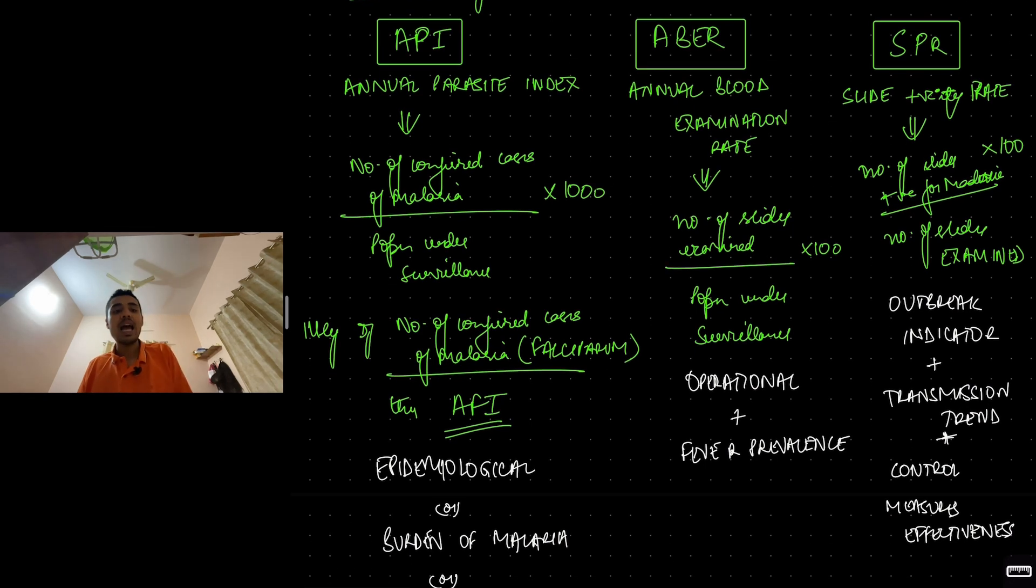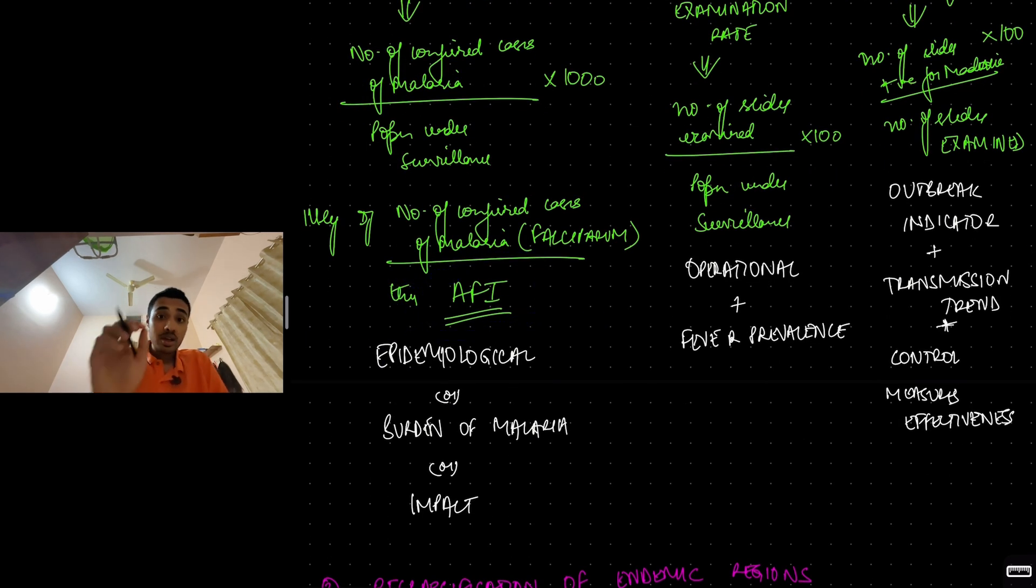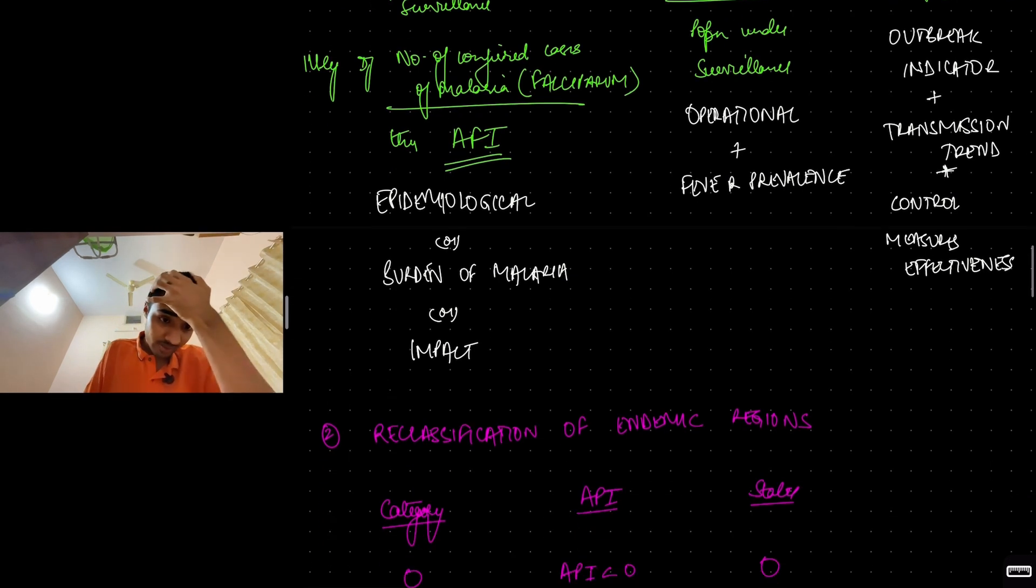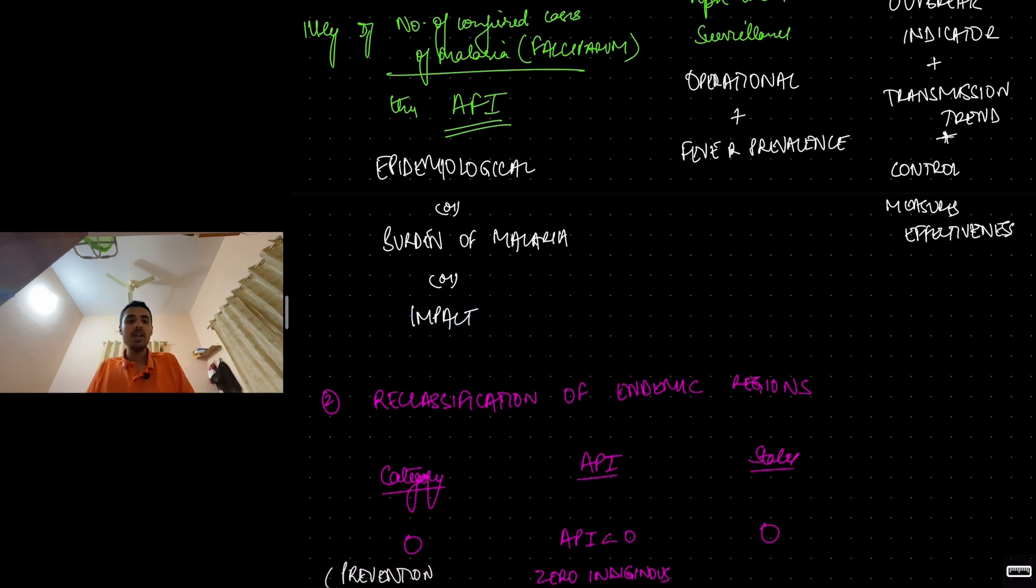Annual parasite index, annual blood examination rate, slide positivity rate. Annual parasite index: the number of confirmed cases of malaria divided by population under surveillance into 1000. Under whole population of surveillance, how many of them have confirmed malaria into 1000. Similarly, there is AFI, annual falciparum index, number of confirmed cases of malaria of Plasmodium falciparum species divided by population under surveillance. This API is the epidemiological indicator. It is telling you burden of malaria, telling you the impact of program. If NVBDCP is working, then API should be less. That is why it is one of the main targets, annual parasite index.